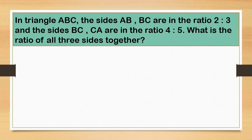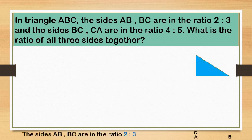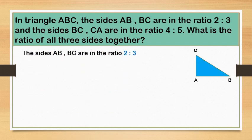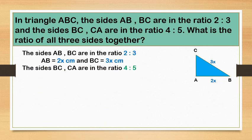Now, let us see another kind of problem. Triangle ABC: sides AB and BC are in the ratio 2 is to 3, and sides BC and CA are in the ratio 4 is to 5. What is the ratio of all three sides? From the question, sides AB and BC are in the ratio 2 is to 3. So let us take length of AB equal to 2X centimeters and length of BC equal to 3X centimeters. Again, the sides BC and CA are in the ratio 4 is to 5.